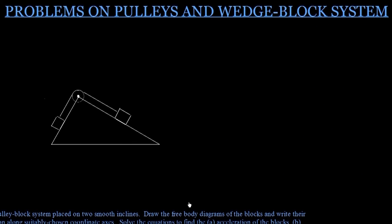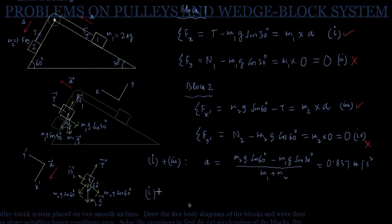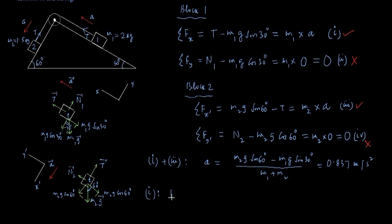Now the topic of this lecture is the problems on pulley block system and wedge block system. The force of tension in the string that remains the same throughout the length of the string is given by simply M1. M1, and if you could take common, that is coming out to be inside bracket A plus G sin 30 degree. We have got the value of M1 here 2 kg.